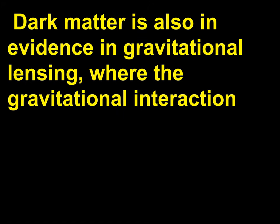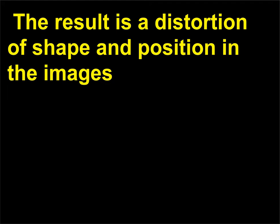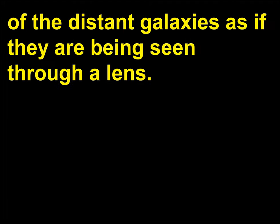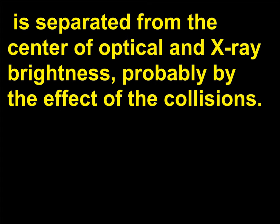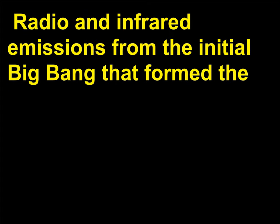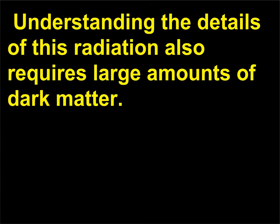Dark matter is also in evidence in gravitational lensing, where the gravitational interaction of mass with light causes the light from very distant galaxies to be bent by nearer galaxies. The result is a distortion of shape and position in the images of the distant galaxies, as if they are being seen through a lens. In one set of colliding galaxies, the center of mass determined by the lensing effect is separated from the center of optical and x-ray brightness, probably by the effect of the collisions. Radio and infrared emissions from the initial Big Bang, called the 3 Kelvin Cosmic Microwave Background Radiation, also require large amounts of dark matter to be understood.